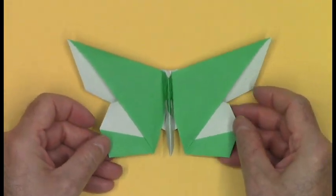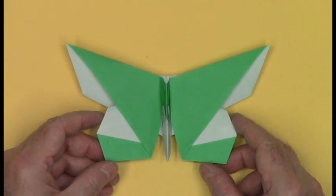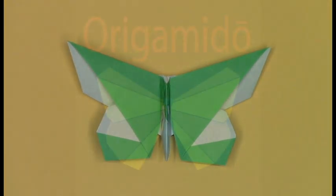And here we have the butterfly for the Ohio paper folders. We hope you enjoyed this project. Now go out and fold up a flock.